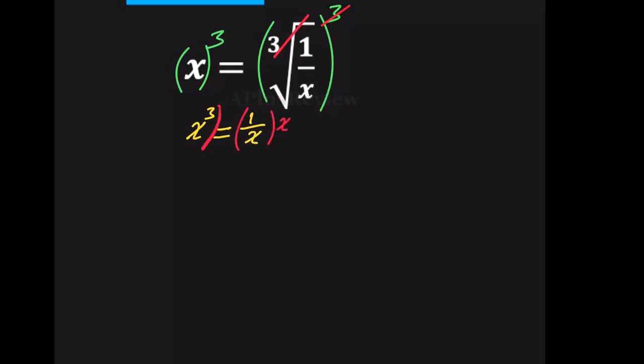we're going to multiply x on both sides. This x and this x cancel out, and we have x to the power of 4 is equal 1.